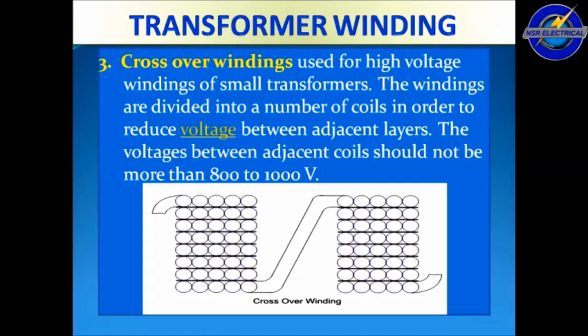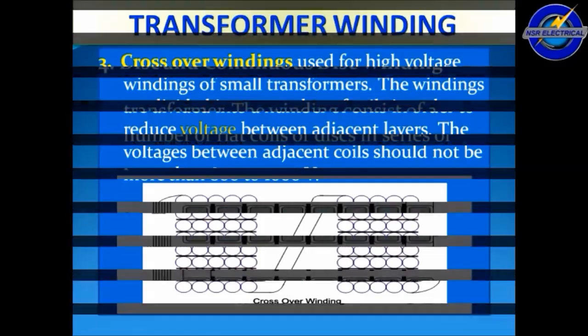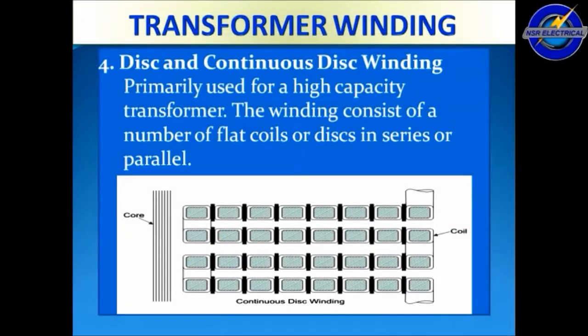The third one is crossover windings. Crossover windings are used for high voltage windings in small transformers. The windings are divided into a number of coils in order to reduce the voltage between adjacent layers. The voltage between adjacent coils should not be more than 800 to 1000 volts.